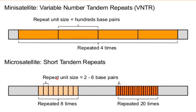The repeat unit size in the microsatellite has been repeated 8 times, whereas in the minisatellite the same repeat unit is repeated 20 times. This is the key difference between minisatellite and microsatellite as shown in the diagram.